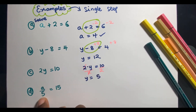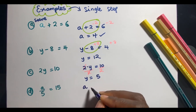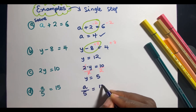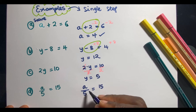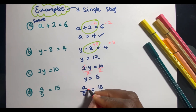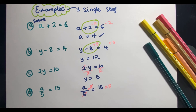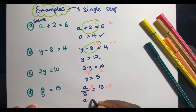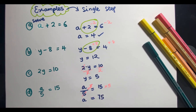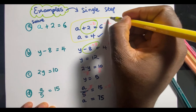The last single-step example says a over 5 is equal to 15. Since this is a division, I can multiply both sides by 5 to get rid of the 5 in the denominator. Multiplying both sides by 5, the 5 cancels and a is equal to 5 times 15, which is 75. Those are the examples for single-step problems.